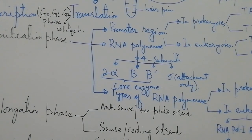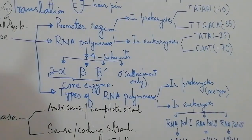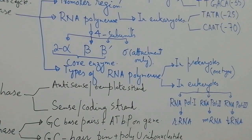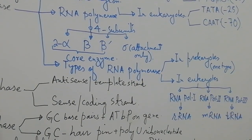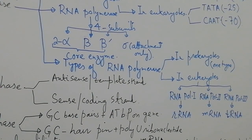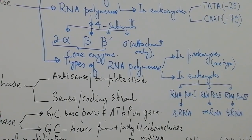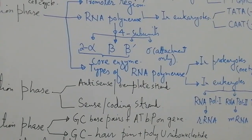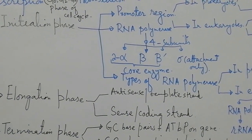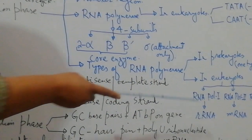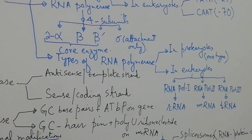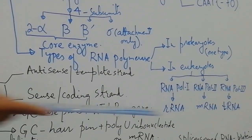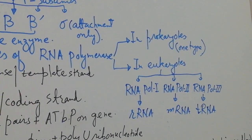RNA polymerase is of only one type in prokaryotes, while in eukaryotes there are three different types of RNA polymerases for making three different types of RNA. All RNAs — ribosomal, messenger, and transfer — are made through transcription. RNA polymerase I in eukaryotes makes ribosomal RNA, RNA polymerase II makes messenger RNA, and RNA polymerase III makes transfer RNA.